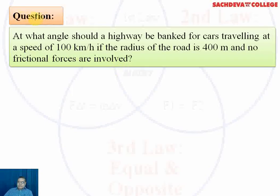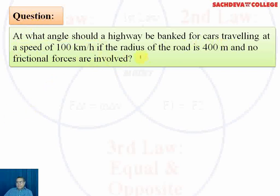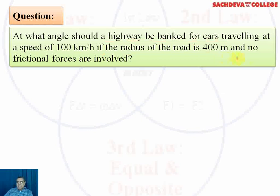In our next question: at what angle should a highway be banked for cars traveling at a speed of 100 kilometers per hour, if the radius of the road is 400 meters and no frictional forces are involved?